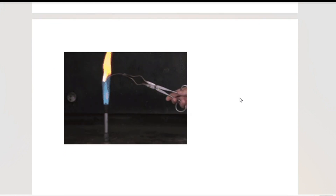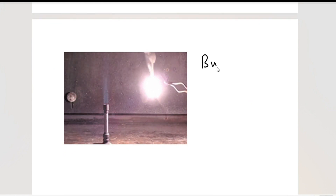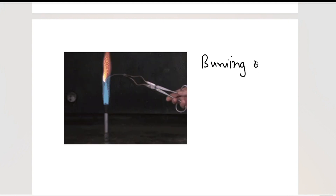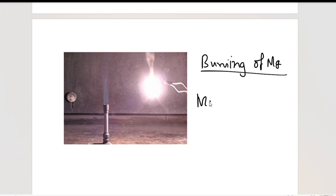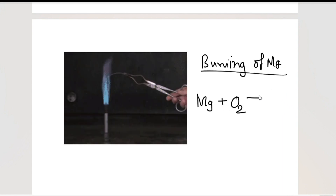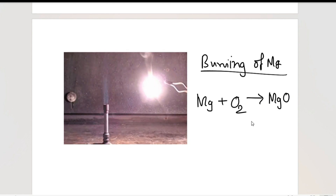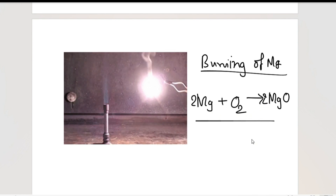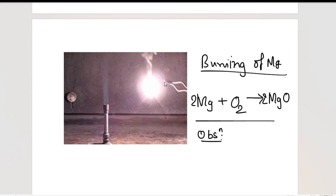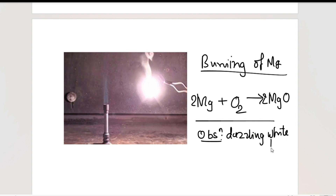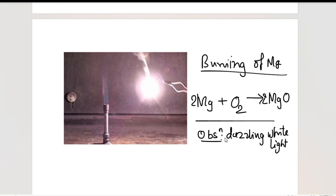One more interesting experiment: burning of magnesium ribbon. Magnesium is a metal; to burn anything we need oxygen; it gives us magnesium oxide. Balancing: put 2 on oxygen, 2 on Mg, giving 2MgO. The observation is a bright, dazzling white light. This is also a combination reaction — two reactants and a single product.